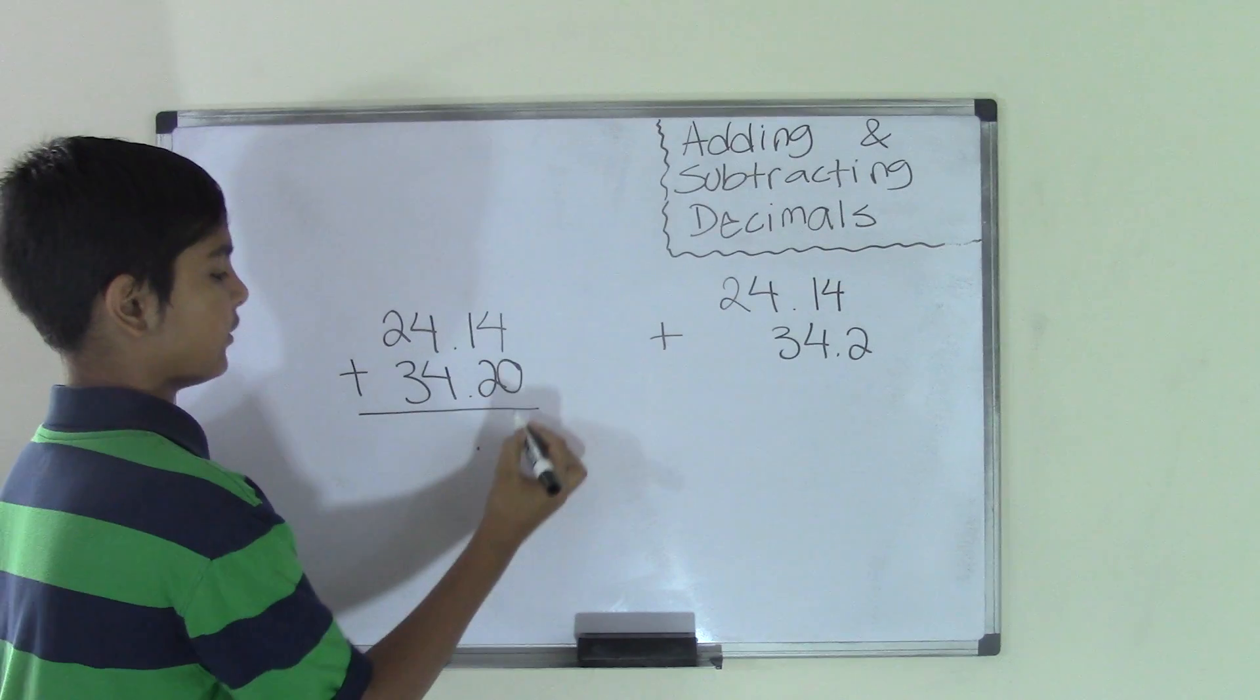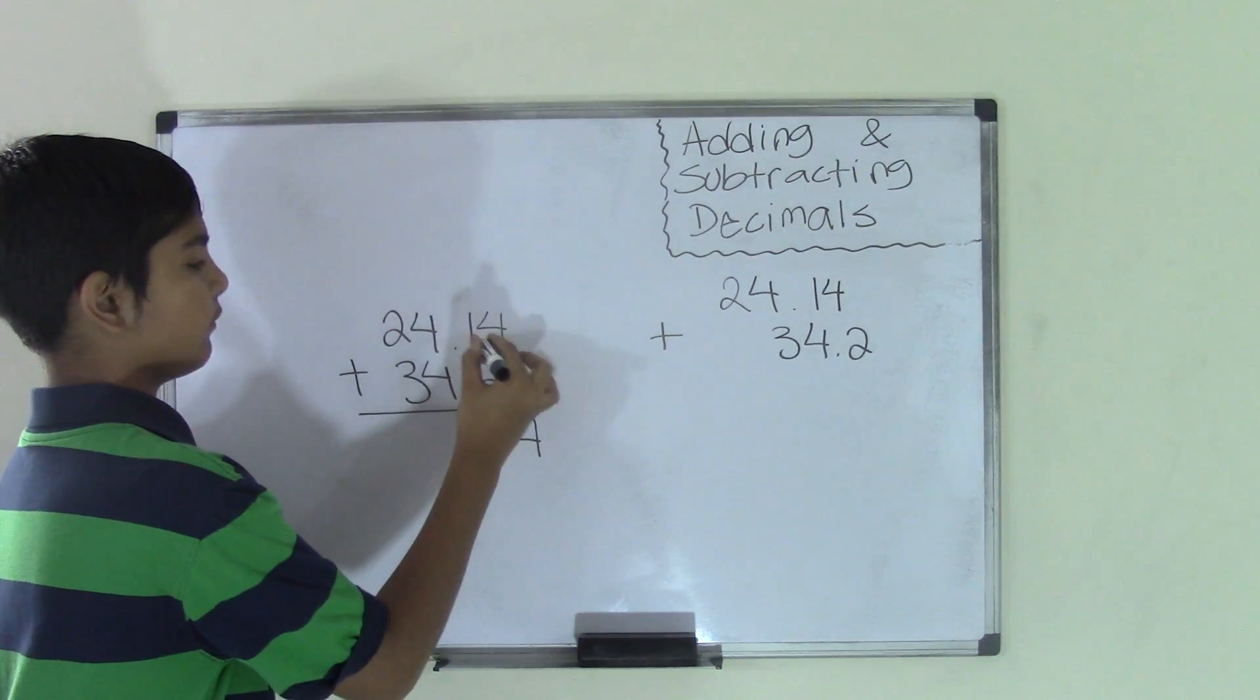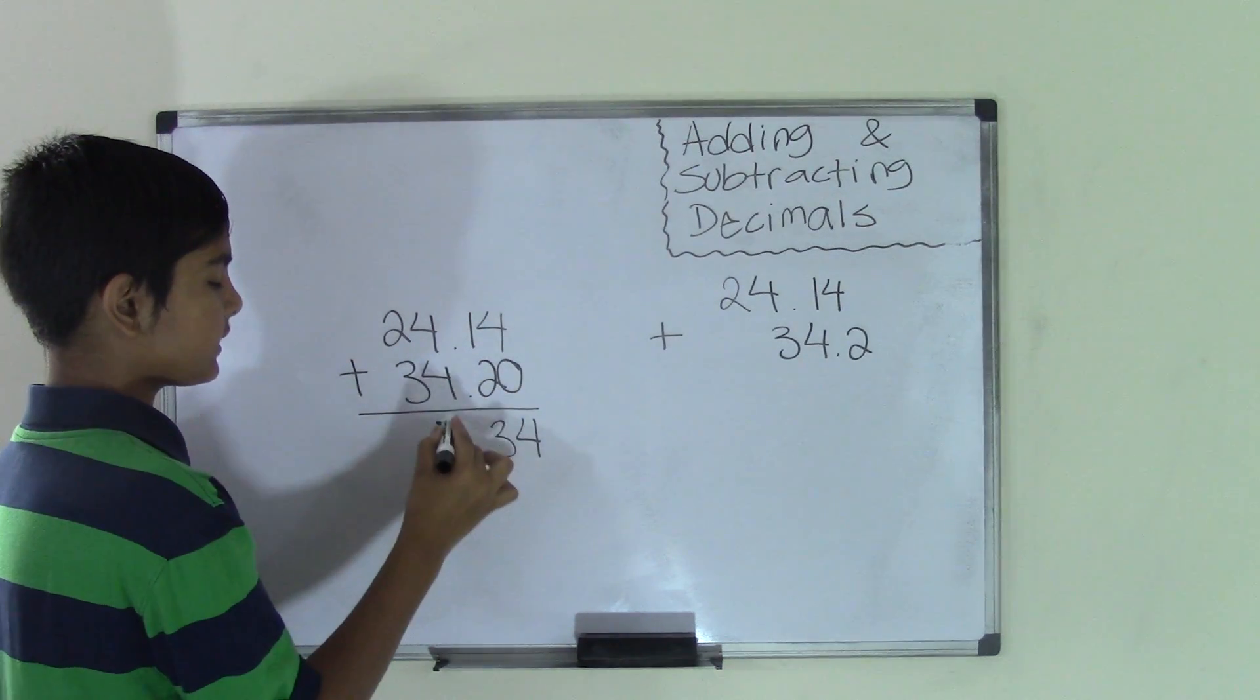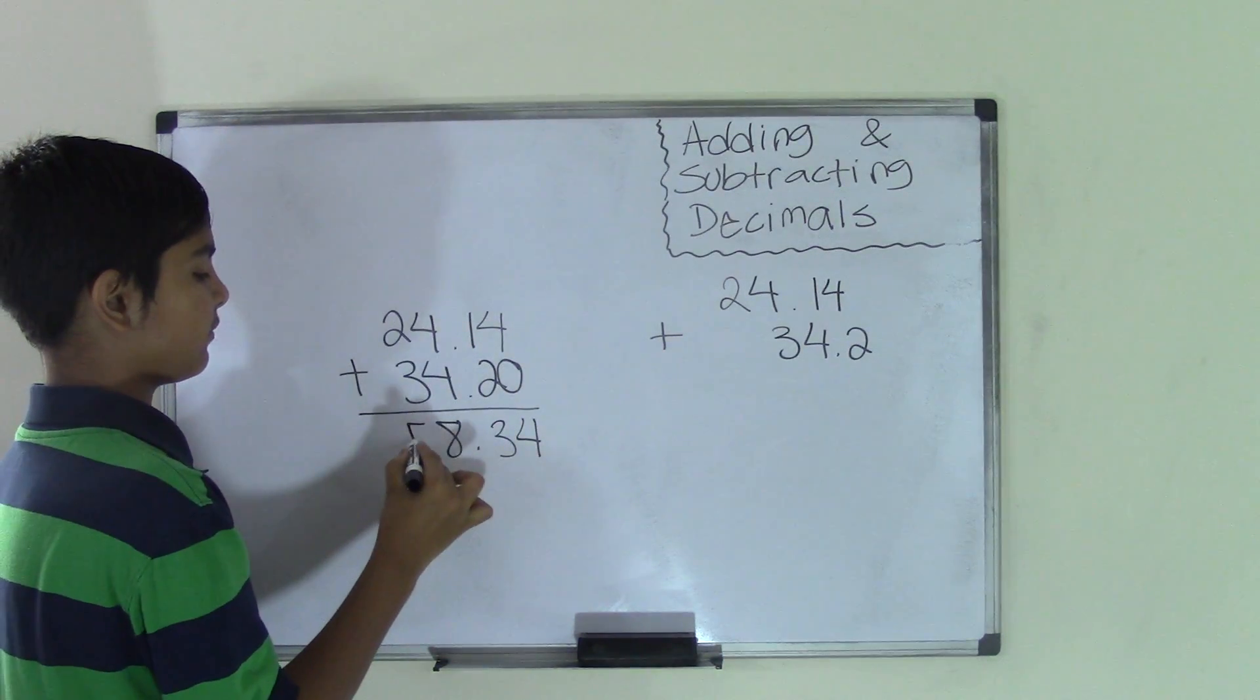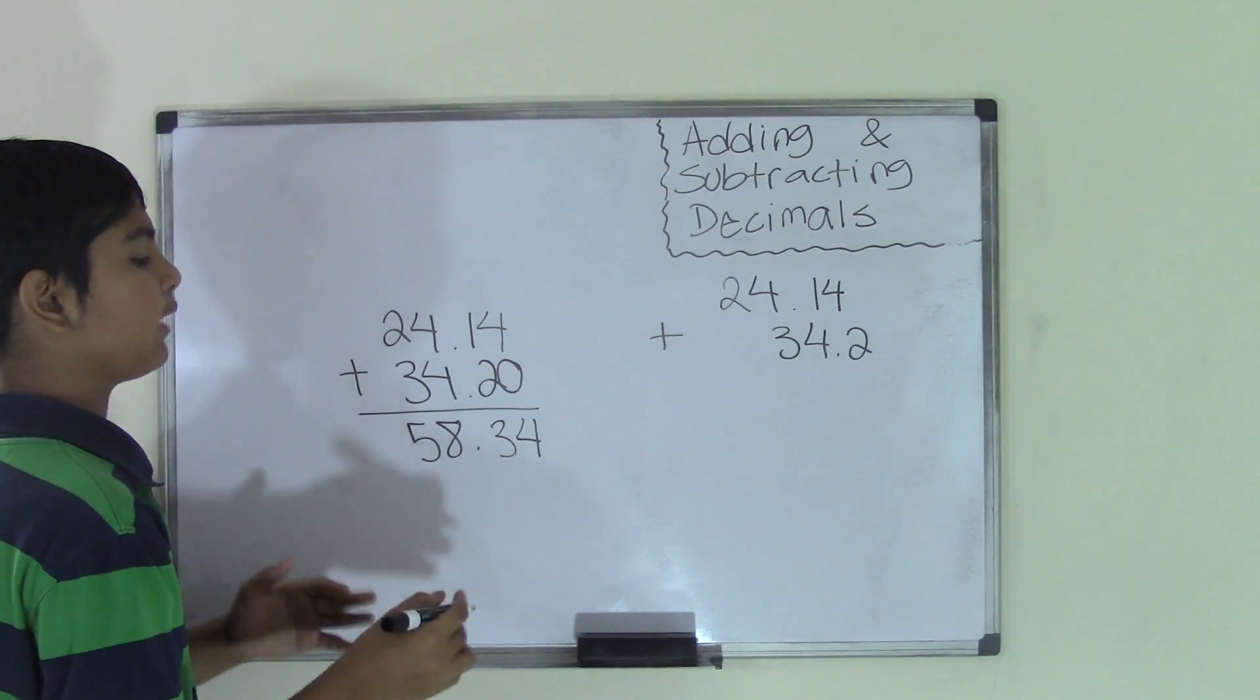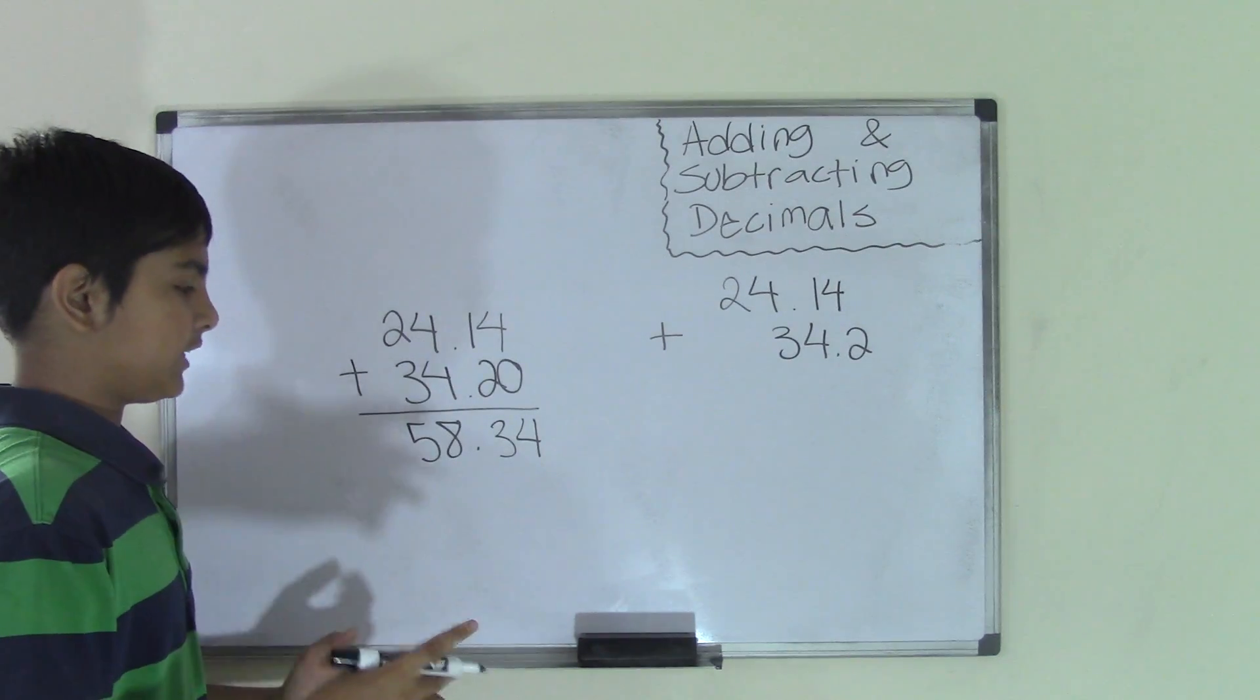So 4 plus 0 is 4. 1 plus 2 is 3. 4 plus 4 is 8. 2 plus 3 is 5. So we have now the sum which is 58.34 and that's how you add a decimal.